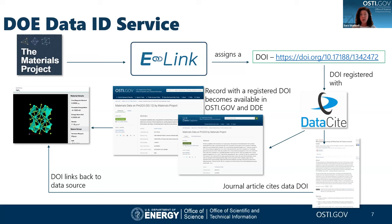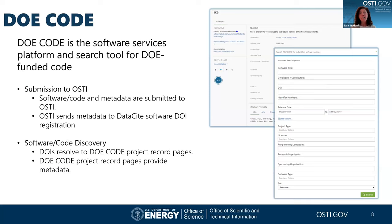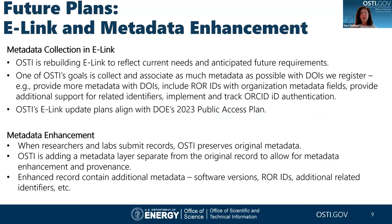When another research object such as a journal article cites that data, the DOI links back to that landing page. We do the same thing for software through DOE Code. DOE Code is the software services platform and search tool for DOE-funded code — just like data, the metadata for software is submitted to OSTI, which then sends it to DataCite for DOI registration. OSTI serves as the landing page for that software, so the DOI resolves to DOE Code where you can find the metadata including versioning information.